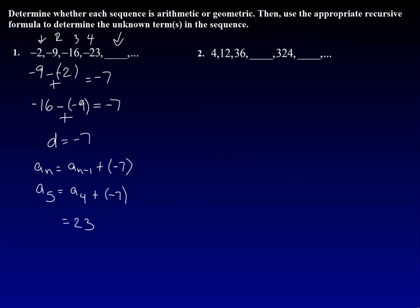And a sub 4 is negative 23. Negative 23 plus negative 7, signs are the same, so we're going to add those and get negative 30.